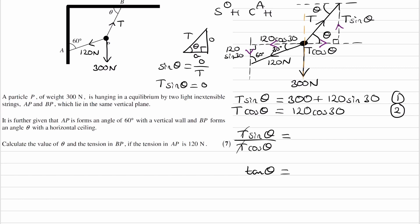And for the right-hand side, we have 300 plus 120 sine 30, all over 120 cos 30, and if we were to type that into our calculator, we would end up with 2 root 3.